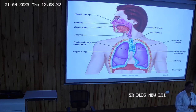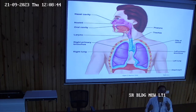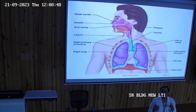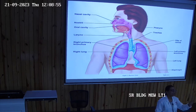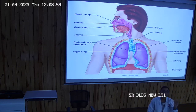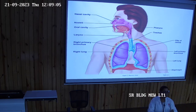The tertiary bronchi further divide and form bronchioles. The basic difference between bronchi and bronchioles is the presence of cartilage. Whether it is a primary, secondary, or tertiary bronchus, cartilage is present. When cartilage is absent and more smooth muscles are present, that portion is called a bronchiole.